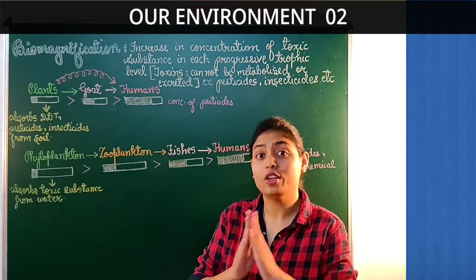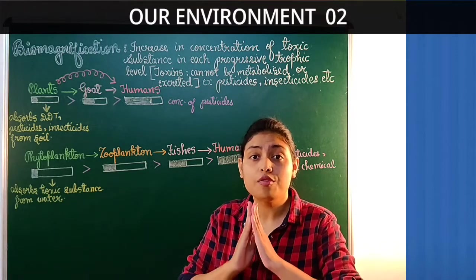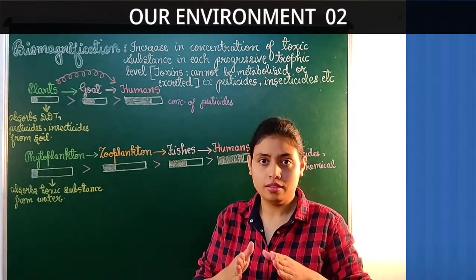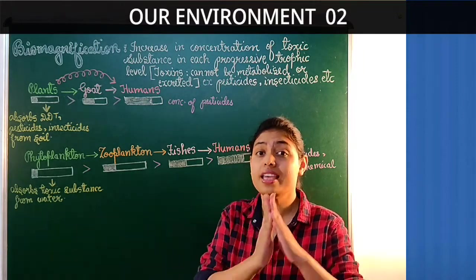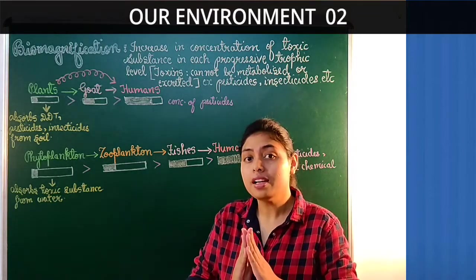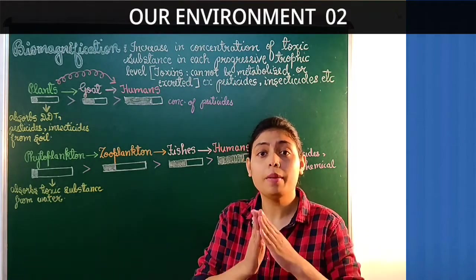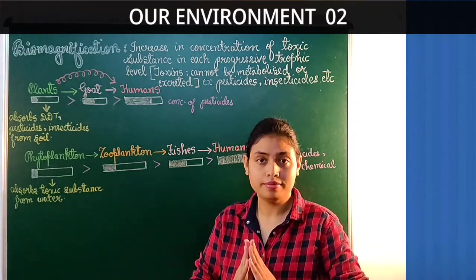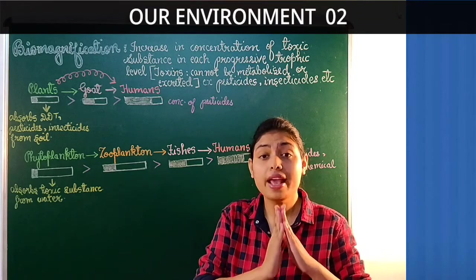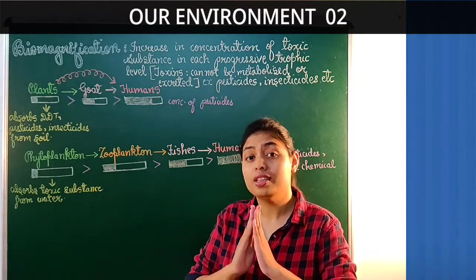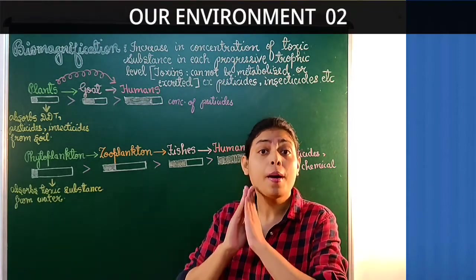Now, why do these toxic substances get accumulated at each trophic level? Because these toxic chemicals cannot be mobilized or excreted from the body. These toxic substances don't break down in the body through metabolic activity and cannot be excreted or removed. Don't forget that these toxic substances cannot be metabolized or excreted out from the body. This is the reason why their concentration increases at each trophic level, and this phenomenon is known as biomagnification.